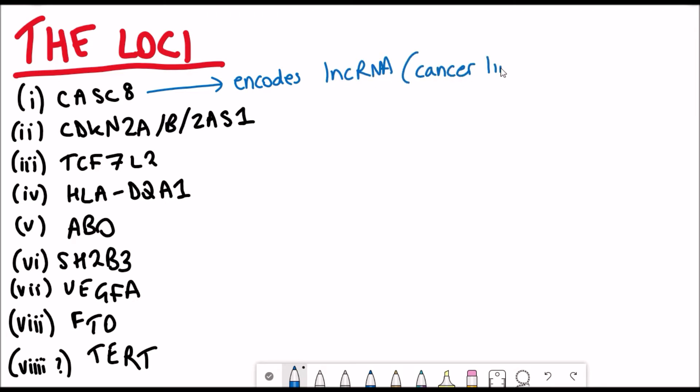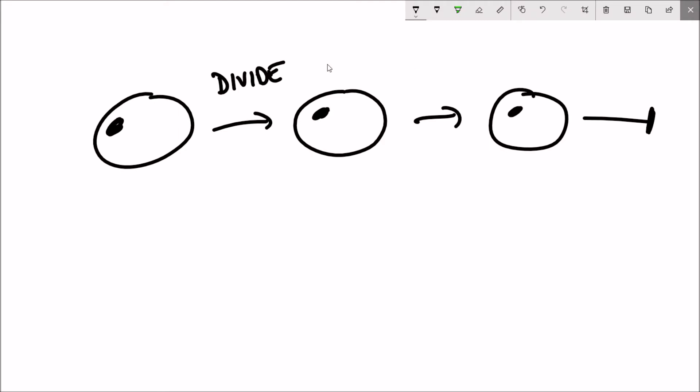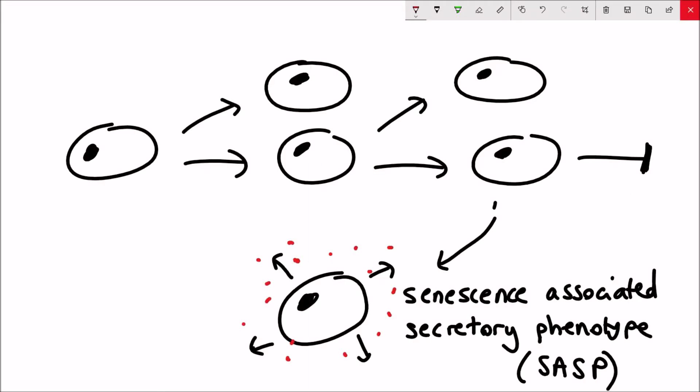The second one is CDKN2A2B or 2AS1. So this loci encodes two different genes, and two of them include p16 and p21, which are both tightly linked with cellular senescence, which, as I mentioned in a previous video, is a hallmark of aging.